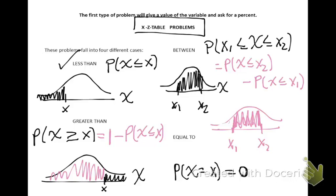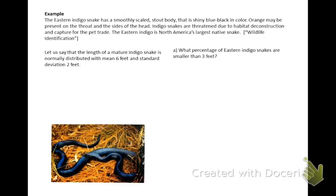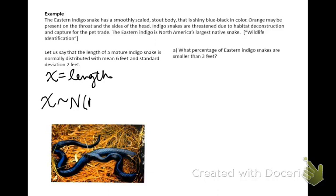The eastern indigo snake has a smoothly scaled, stout body that is shiny blue-black in color. Orange may be present on the throat and sides of the head. Indigo snakes are threatened due to habitat destruction and capture for the pet trade. Let us say that the length of a mature indigo snake is normally distributed with a mean of 6 and standard deviation of 2 feet. We'll write this as Normal(6, 2), where 6 is the mean and 2 is the standard deviation.